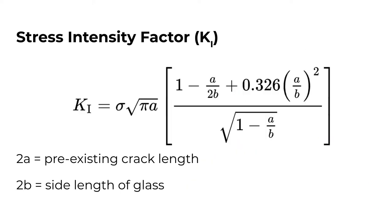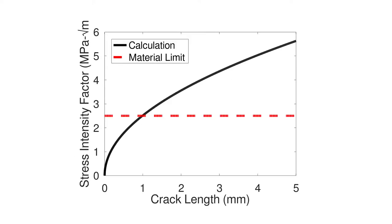The equation I'm using here is for the stress intensity factor in a square piece of glass. Here it is. And when I plot this out, here's what we find. A relatively small crack on the order of one millimeter in length would be enough to cause the window to fracture with the amount of stress induced by the ball Von Holzhausen throws.